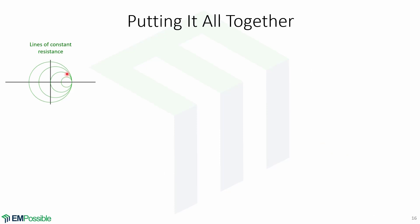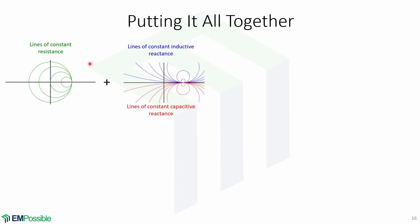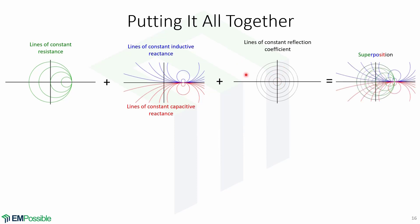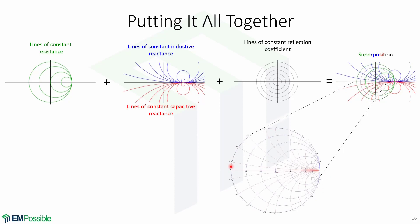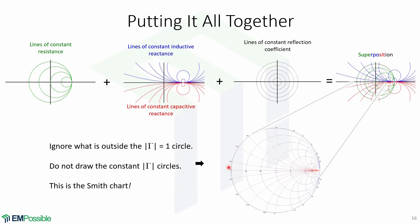When we put together the lines of constant resistance, plus the lines of constant inductive reactance on the upper half and the lines of constant capacitive reactance on the bottom half, plus the lines of constant reflection coefficient, we obtain — by superposition — the entirety of the Smith chart. Remember that we're modeling passive systems, so we ignore what's outside the gamma equals 1 circle. We do not draw the constant gamma circles; we just know that they are there. This is the Smith chart.